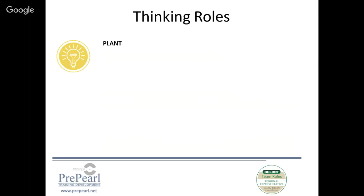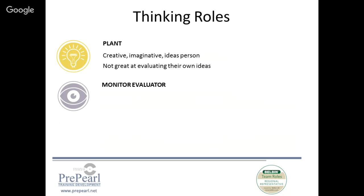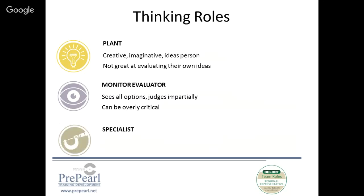In the thinking roles, you have the Plant — symbolized by a light bulb — someone who is creative, imaginative, and an ideas person, though not very great at evaluating their own ideas. The Monitor Evaluator is symbolized by the eye — someone who really looks at all options, weighs pros and cons, sees all options and judges impartially; their possible weakness is being seen as quite critical. The Specialist — with a specialized tool as the symbol — individuals who have very deep knowledge, possibly in a narrow area, but they bring knowledge in rare supply. Their tendency is to dwell on technicalities.